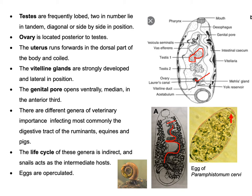These are the common features of the genera under the family Paramphystomatidae. The life cycle of these genera is indirect — meaning there is involvement of an intermediate host or vector, which is a snail host, and the eggs are operculated. More details about the eggs of different species will be discussed later.